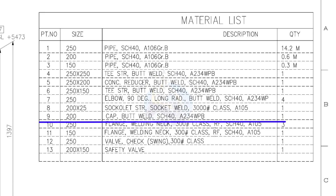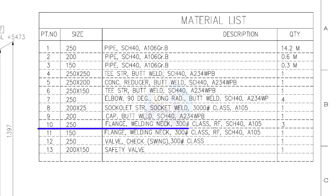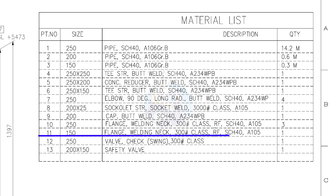Item number 9: cap, butt welded, Schedule 40. Quantity: 1. Item number 10: 250 NB weld neck flange, Class 300, raised face, Schedule 40. Quantity: 3. Item number 11: 150 NB weld neck flange, Class 300, raised face, Schedule 40. Quantity: 1.